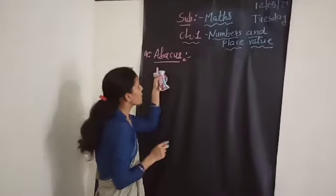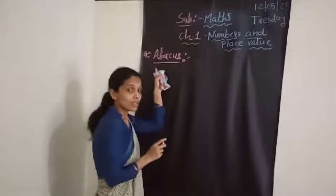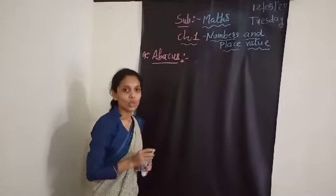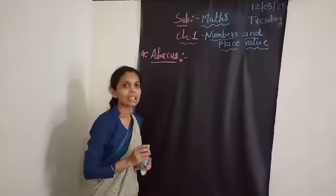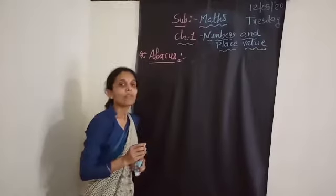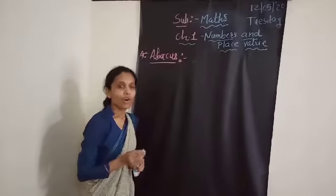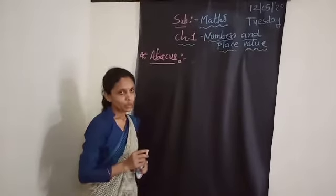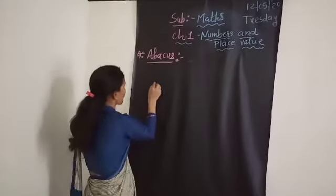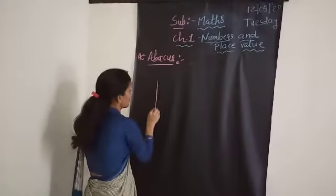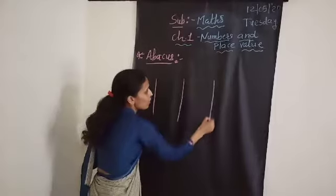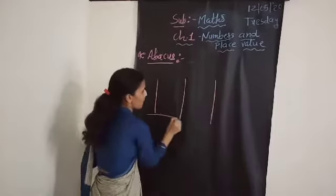What is the Abacus? Abacus is an instrument with which we can count numbers and understand the place value of any given number. With the help of Abacus, we understood the place value of given numbers.